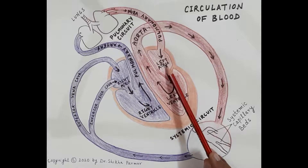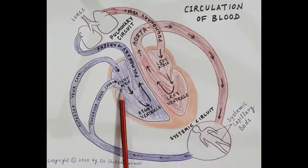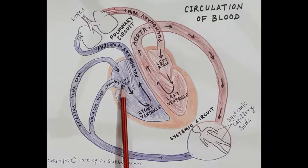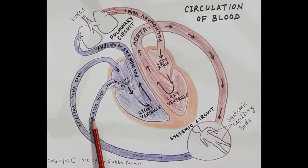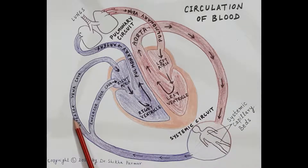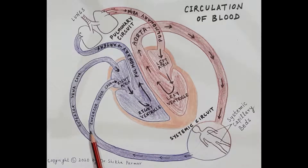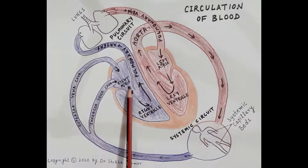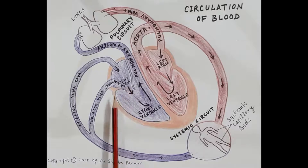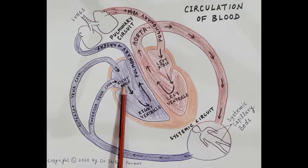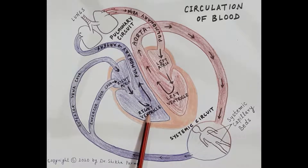Each part of the heart is further divided into two parts, so overall the heart has four chambers: right atria, left atria, right ventricle, and left ventricle. It is the right atria that receives deoxygenated blood from the body. The superior vena cava brings deoxygenated blood from the upper part of the body and the inferior vena cava brings it from the lower part, both received by the right atria. When the right atria contracts, this deoxygenated blood is pumped into the right ventricle.